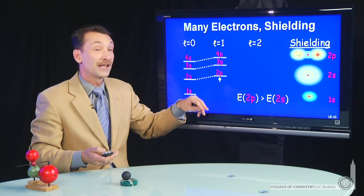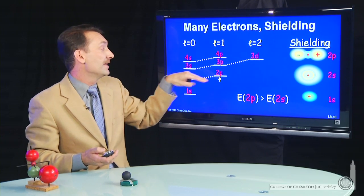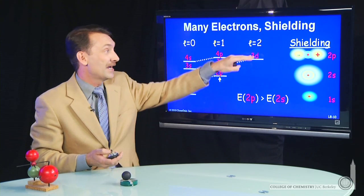And that effect continues. If you look at L equal 2, the d orbitals are shielded by the internal s and p orbitals below them. So they go to higher energy.